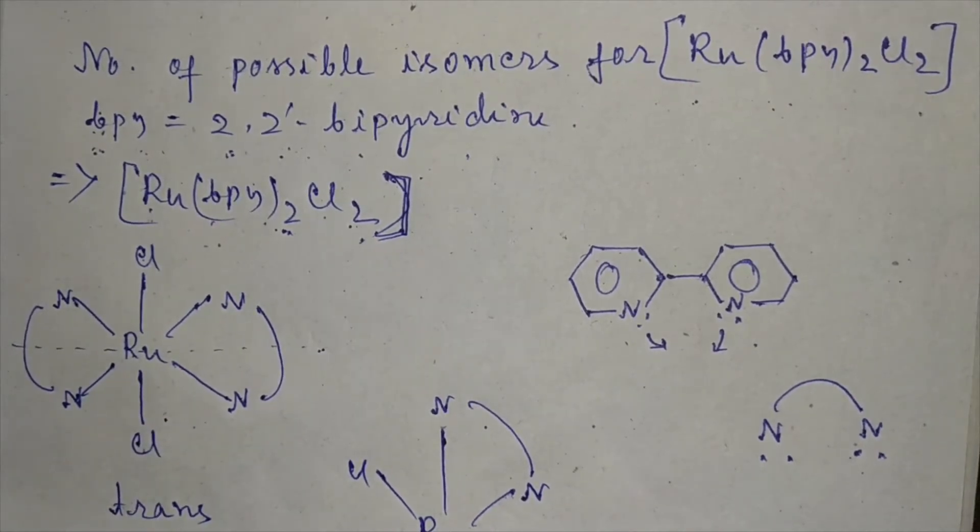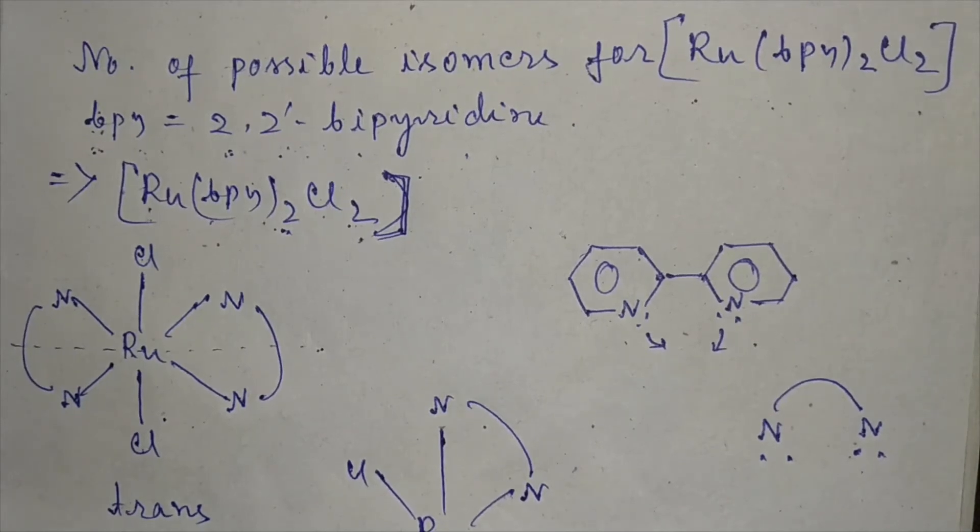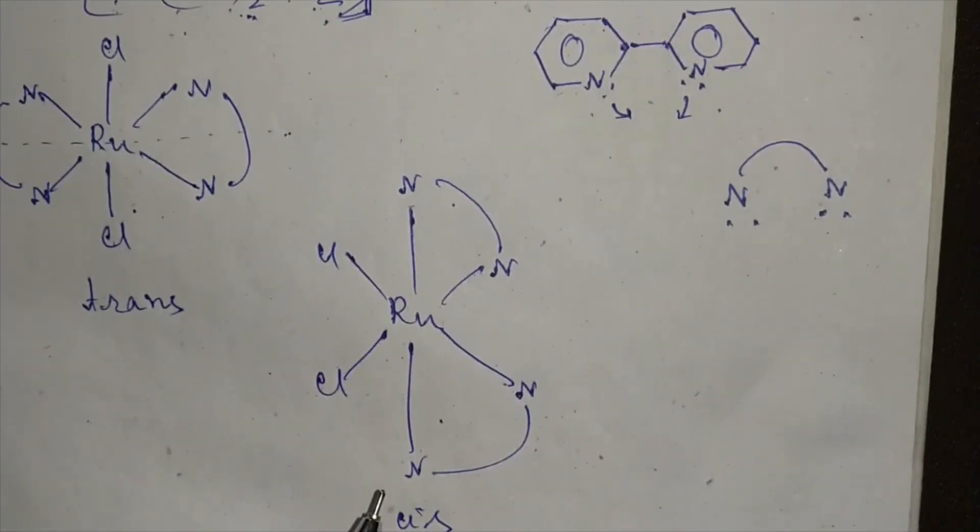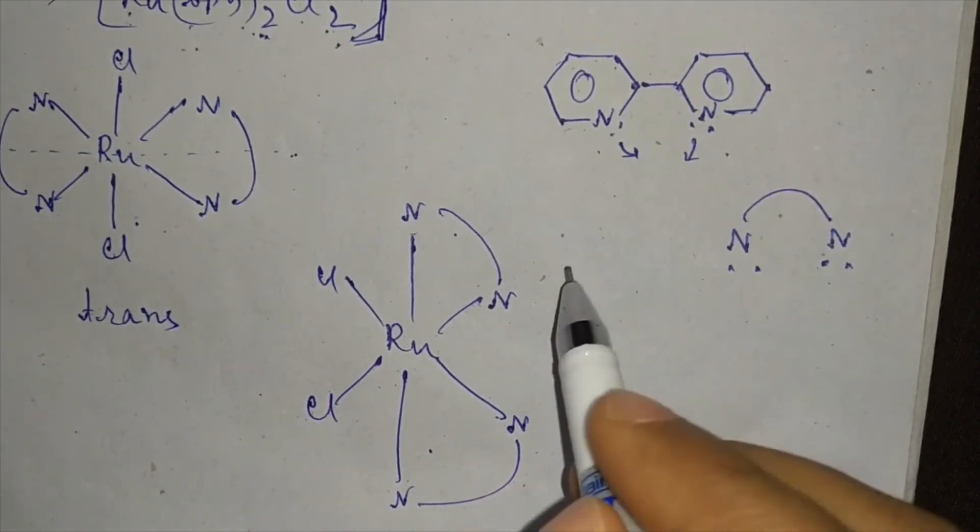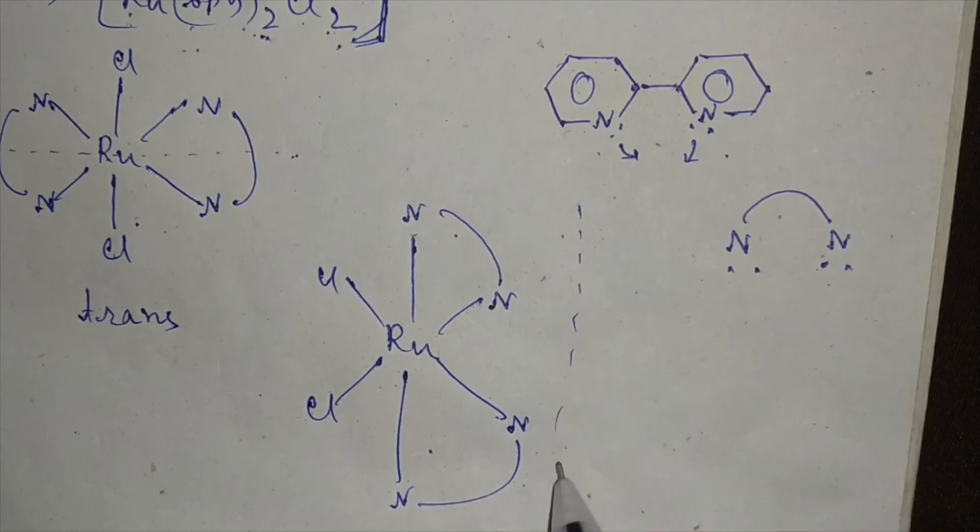In this molecule, there is no plane of symmetry, so this is optically active. For an optically active molecule, there must be one enantiomer.